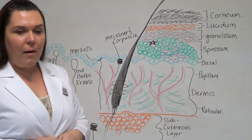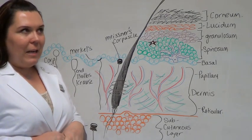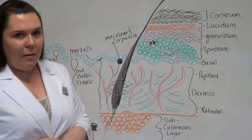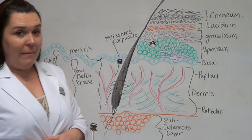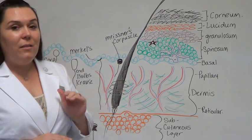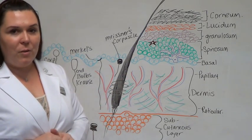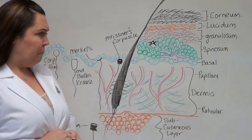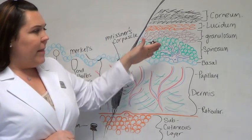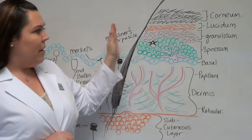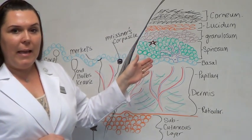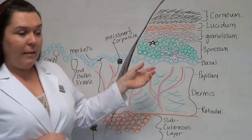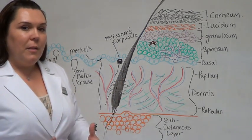Also found in the basal layer are melanocytes. Melanocytes make melanin, which is the pigment found in our skin. Melanin is very important because it's our natural SPF and defense against UV rays. When the sun hits the skin, the UVA rays penetrate the skin and activate the melanocyte. The melanocyte starts producing melanin.